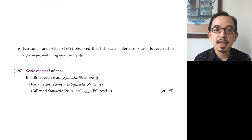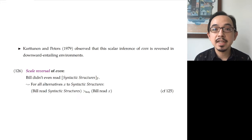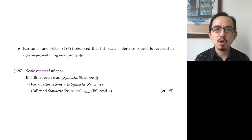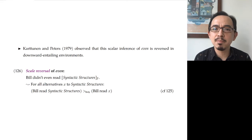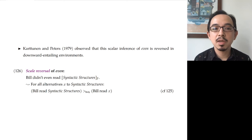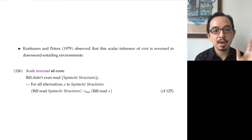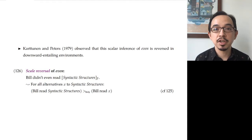Karttunen and Peters observed that the scalar inference of even is reversed in downward entailing environments. Take the negated sentence in example 126: 'Bill didn't even read Syntactic Structures.' Here we get an inference that Syntactic Structures should have been the most likely thing to read, not the least. The inference is that for all alternatives x to Syntactic Structures, the proposition that Bill read Syntactic Structures is more likely than all those other alternatives.